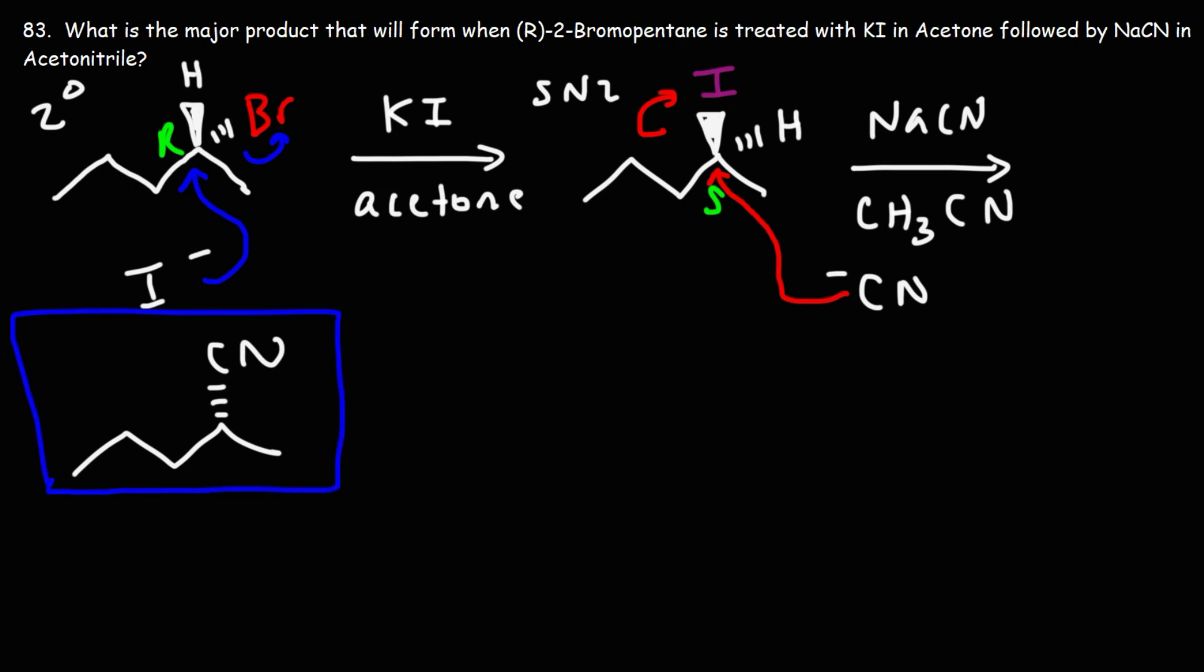What we did was basically a double SN2 reaction - a double inversion reaction which gave us retention. We started with the R isomer, and in the first SN2 reaction we went from R to S. In the second SN2 reaction we went from S back to R.